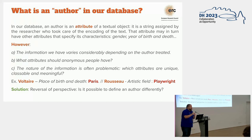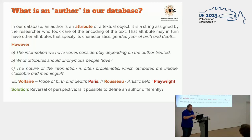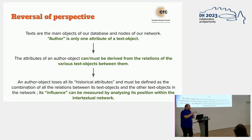Very quickly, the idea of what the author is in our database: even though we're modeling actions that are real and not real, or text and actors, for us the author is just an attribute of a textual object. It could be any other attribute — it's not that special thing. There's different things that vary from different metadata sources. For example, Voltaire's place of birth and death is listed as Paris, but that doesn't really tell you much since he didn't really work in Paris his entire life. Rousseau is classified as a playwright because he wrote one play. So we flatten this all out: texts are the main objects of our database, text reuses are the main nodes of the network, and the author just becomes one attribute among others of a text object.